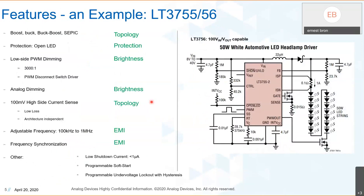Moving to actual device examples, the LT3755 is a relatively old controller. Looking at its datasheet page one, the features map to these areas: topology — it can do buck, buck-boost, and SEPIC; high-side current sensing relates to topology and regulation; open LED protection for safety; PWM and analog dimming for brightness control; and adjustable frequency with synchronization for EMI.